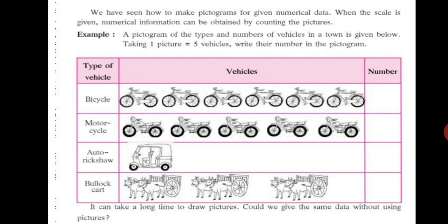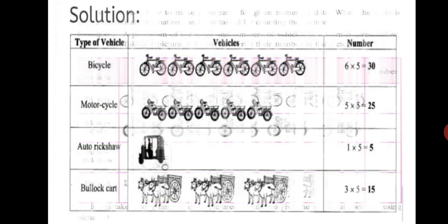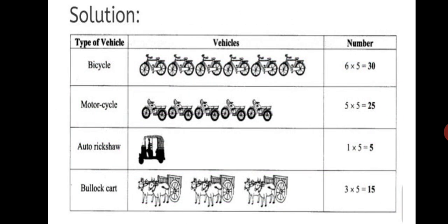That means we will have to count the number of bicycles in the picture and multiply it by 5 to obtain the exact number of bicycles that are given in this data. So, let's have a look. Bicycle, count 1, 2, 3, 4, 5, 6. 6 multiply by 5, answer 30.